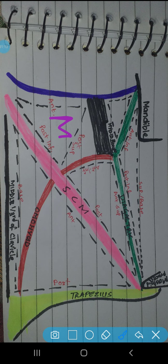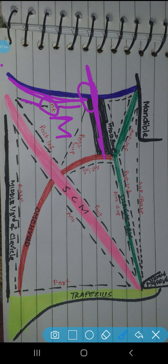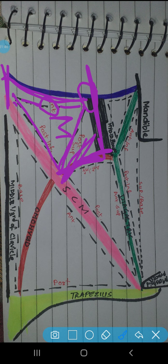Now let's see the anterior triangle subdivisions. First is the muscular triangle - its boundaries and contents. This is the anterior boundary, this is the entire median line. This is the outer barrier which extends toward the hyoid bone towards the sternum. The posterior boundary is divided - posteriorly superiorly is formed by the superior belly of omohyoid.